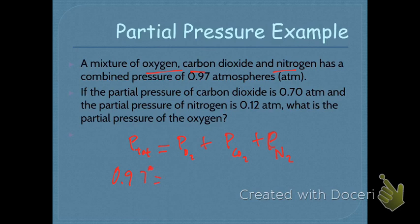We want to find the partial pressure of oxygen: P(O2) + 0.70 + 0.12 = 0.97 atmospheres. Solving for P(O2) gives 0.15 atmospheres.